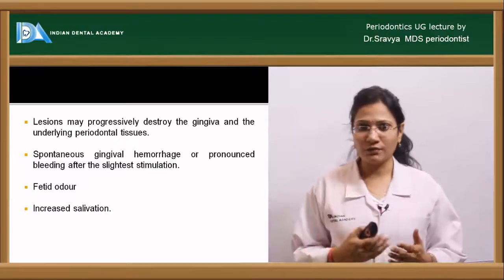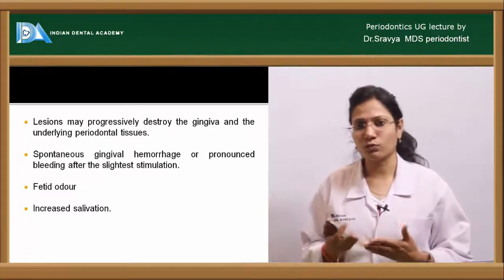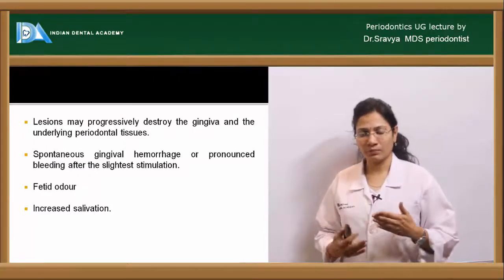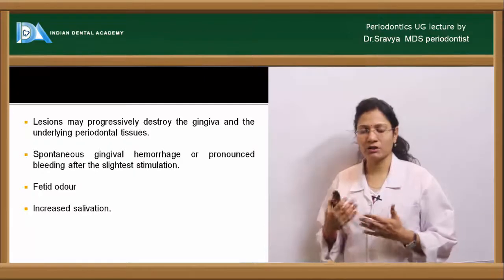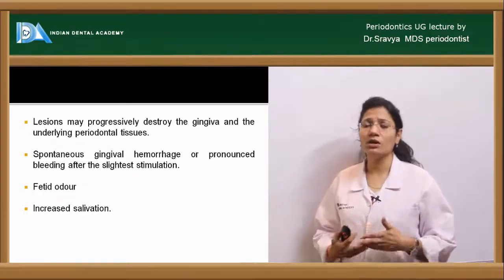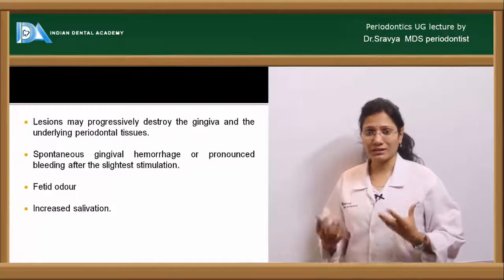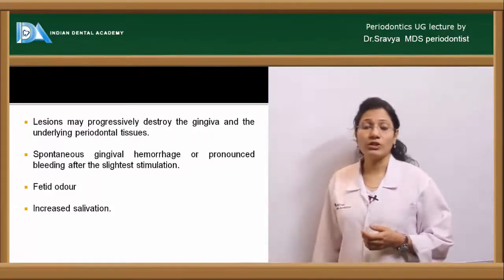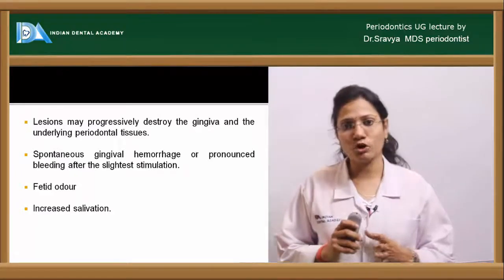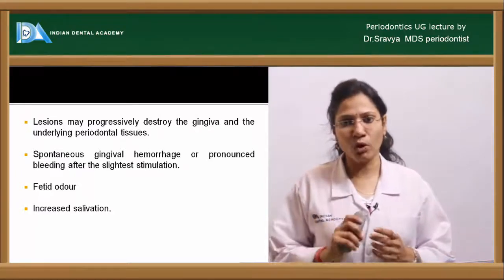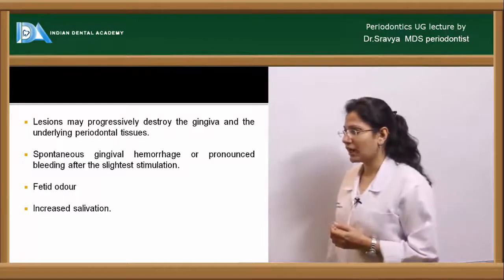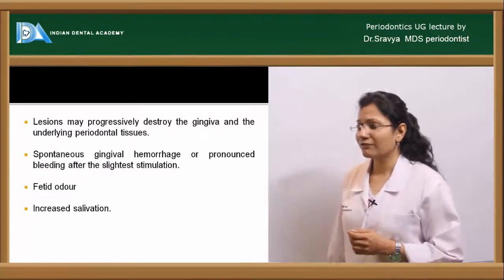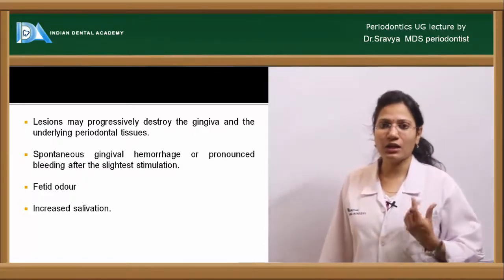If the infection spreads to involve the periodontal apparatus, there will be resorption of alveolar bone, gingival margin recession, and spontaneous bleeding — even with the slightest stimulation. There is a fetid odor and increased salivation with increased viscosity of saliva.